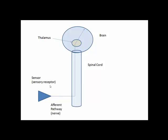The sensory receptor picks up all of the information and converts it to electrochemical information. Once this information is converted, it is carried to the central nervous system via what's called an afferent pathway, which is typically a nerve.